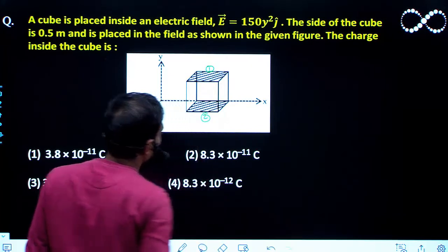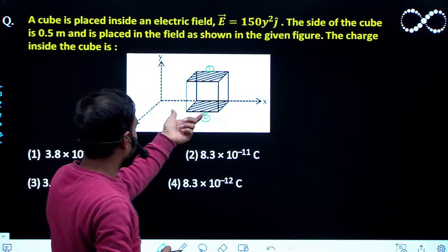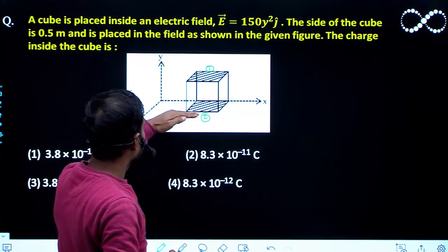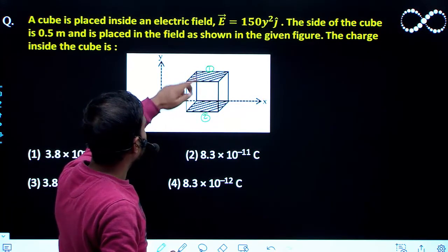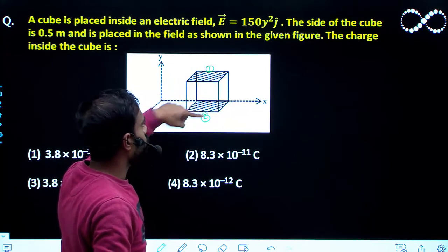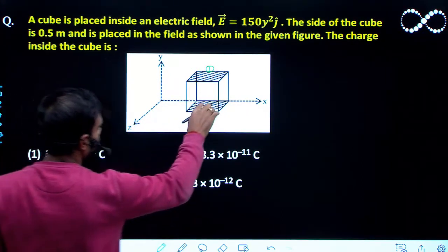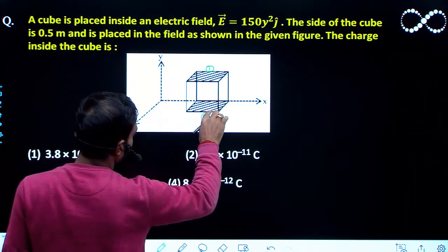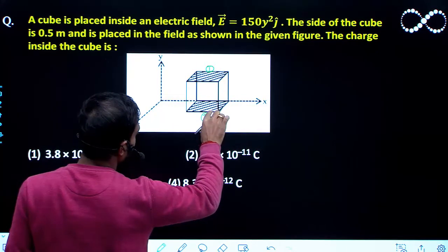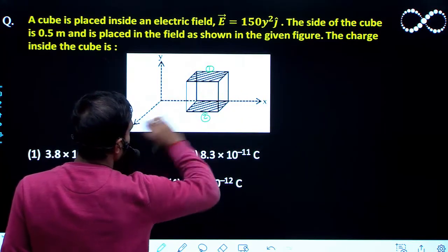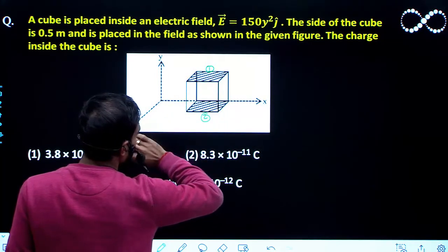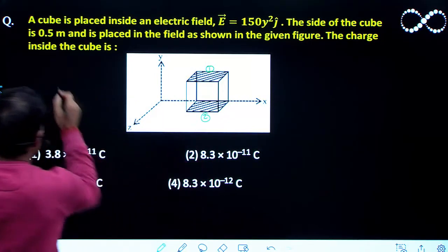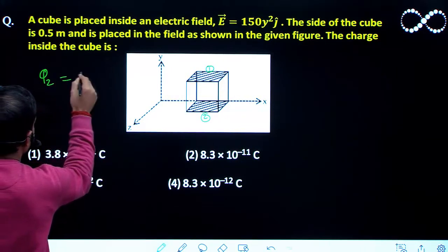If we observe here, at phase 2 the electric field is 0 because at phase 2 the y coordinate is 0. So the electric field will be 0 at the phase 2. Since at every point of the phase 2 the y coordinate is 0, so the electric field will be 0. So since the electric field is 0 at the phase 2, the flux passing through the surface 2 will be 0. So I can say here the flux 2 will be 0.